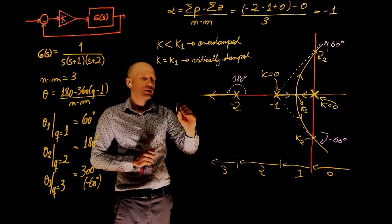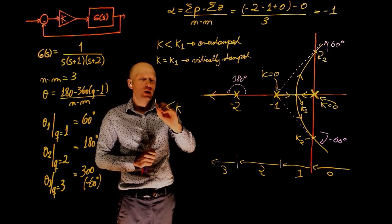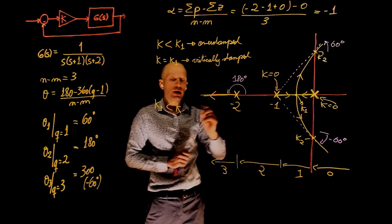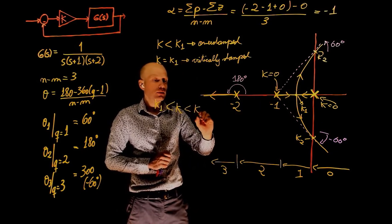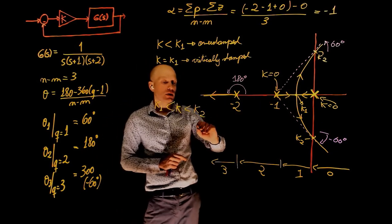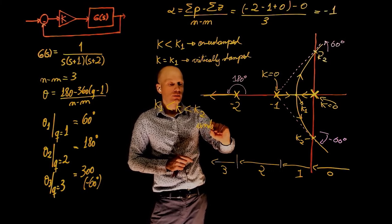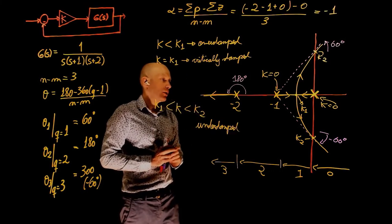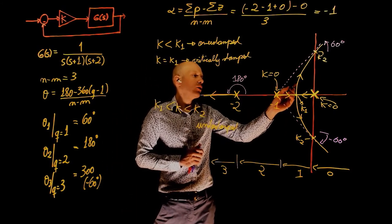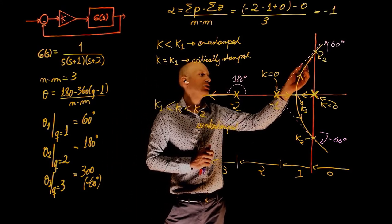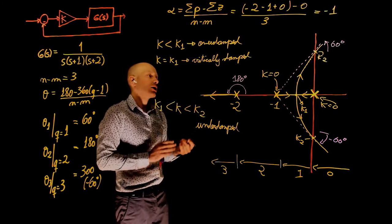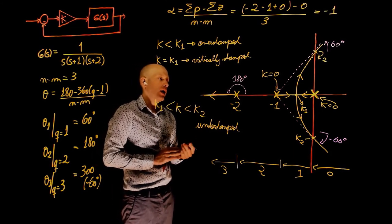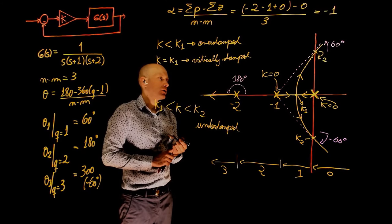When k exceeds k1, so k is greater than k1, but it's smaller than k2, the system is underdamped. Because now all poles are located on this part of the root locus, and this part of the root locus has complex conjugate numbers as poles that represent an underdamped system.